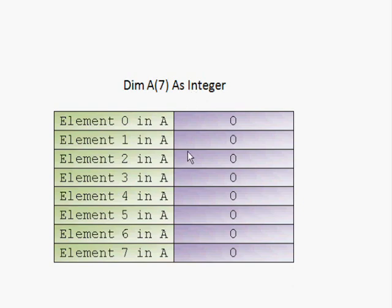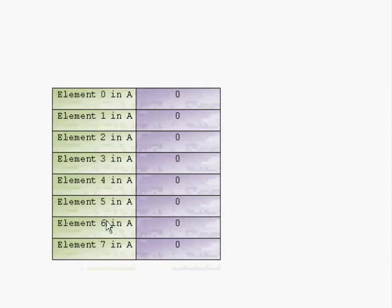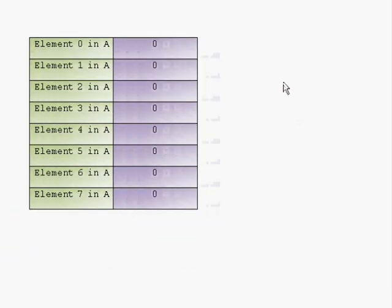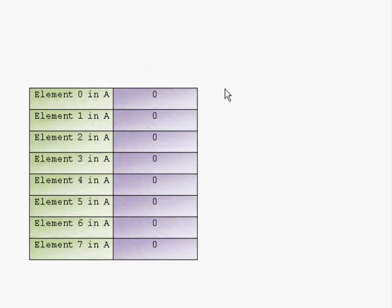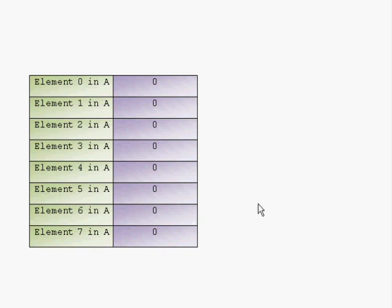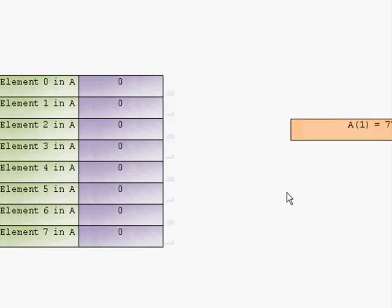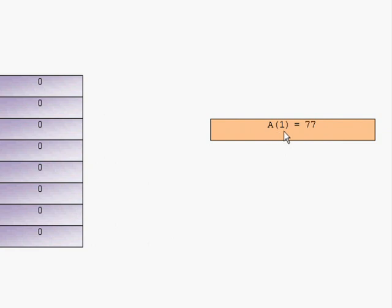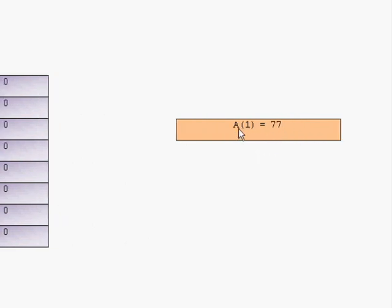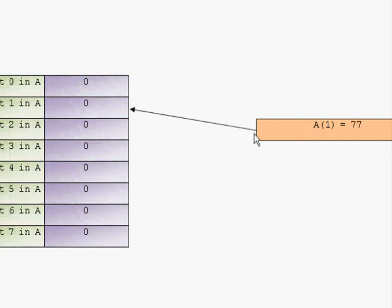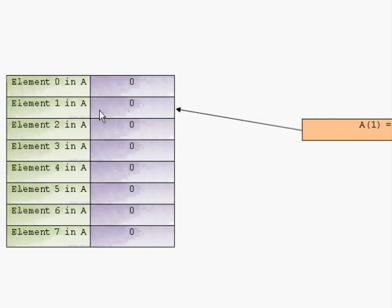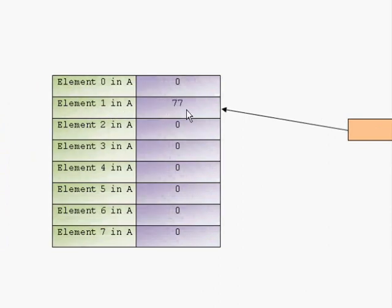Before going to the coding part, let's see how we use an array. Let's assume we have this array — we already defined it with the Dim statement and it all contains zero. If we have a statement like A(1) = 77, the computer sees A, knows you are accessing the array named A, checks the value 1, and goes to location 1 and stores 77 there.